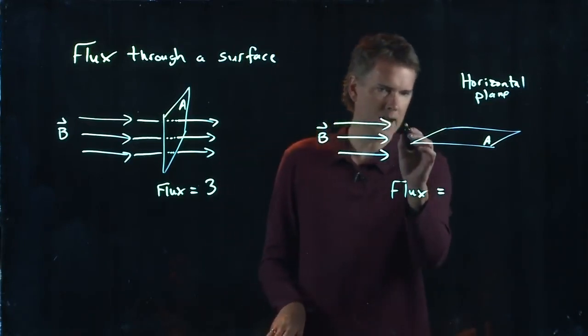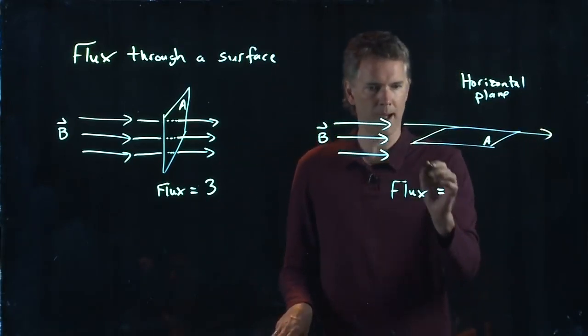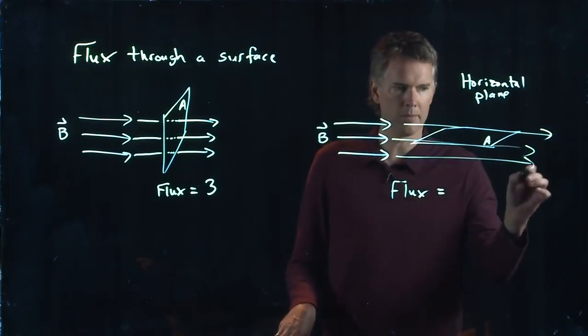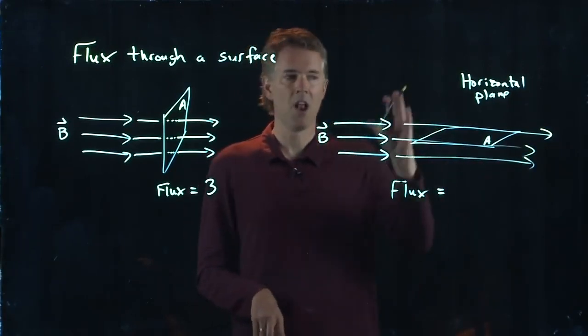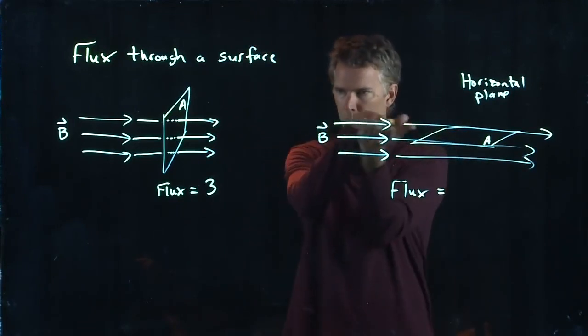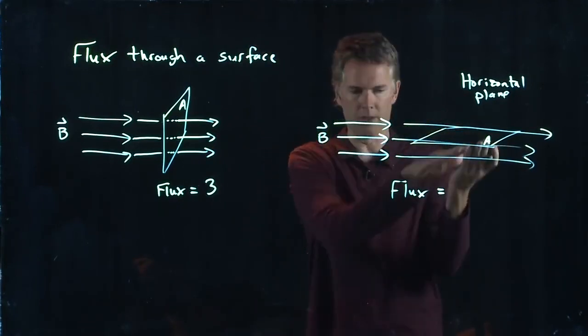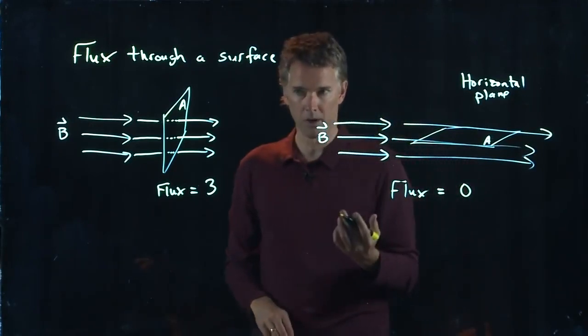Zero. Right? The top line skims right on past. The middle line skims right on past. The bottom line skims right on past. None of them actually go through this infinitely thin surface. And so the flux is zero.